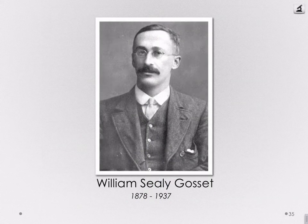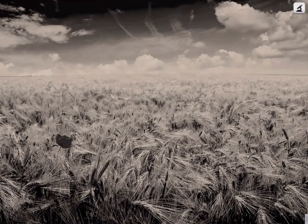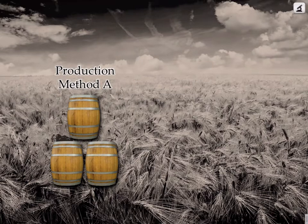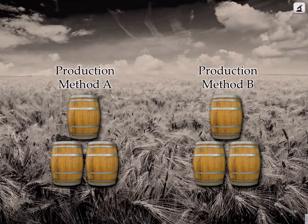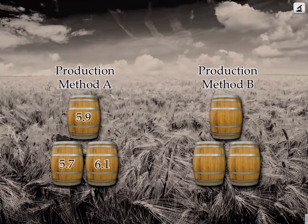Gossett was born in England, went to New College in Oxford, graduated with a degree in mathematics and chemistry, and ended up working for the Dublin Brewing Company — Guinness. He was working in their labs trying to get an idea of the best production methods for barley, really working on how to maximize yield given different farming or brewing techniques. But he was working with really impoverished data. If he had production method A, they wouldn't want to make hundreds of barrels using it — they would want to try it out with just a few. Each barrel itself would produce just one value.